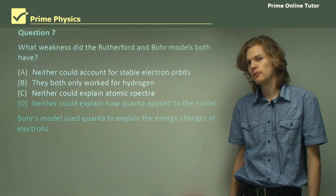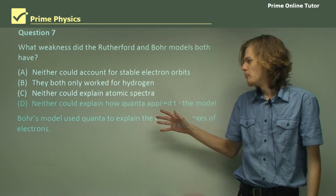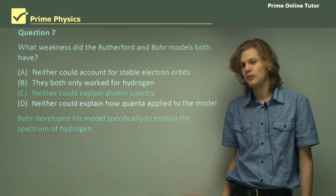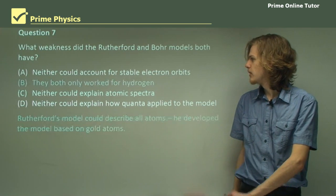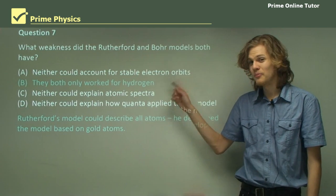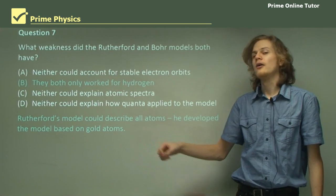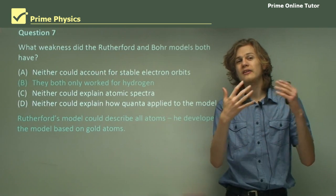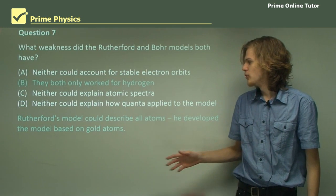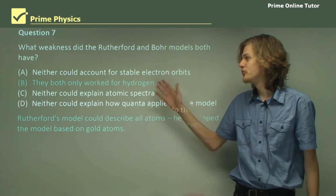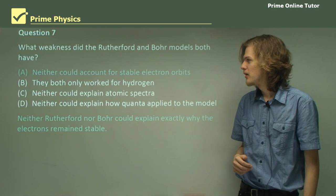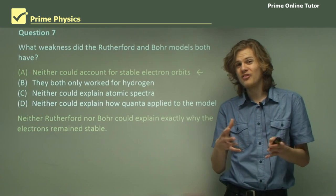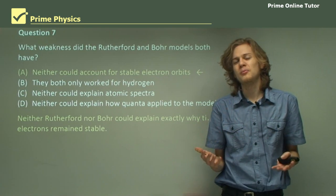D. Neither could explain how quanta applied to the model. Now it's true that Rutherford's model couldn't do this. It was completely classical. But Bohr's model did use quanta to explain the different energy levels of the electrons. So it's not D. How about C. Neither could explain atomic spectra. Well, once again, Rutherford's model couldn't do that. But Bohr's could. B. They both only worked for hydrogen. Now this is one of the big shortcomings of Bohr's model. It couldn't explain heavy atoms. But Rutherford's model could explain any sort of atom. It's just a big heavy nucleus in the middle with electrons going around the outside. And in fact, he came up with this model after he was bombarding gold atoms. And he noticed that the nucleus was doing something odd. So in fact, Rutherford's model works for all the elements. But Bohr's does not. B is not the correct answer though. Because it works for Rutherford's model. Our last option then is A. Neither could account for stable electron orbits. And in fact, this is the correct answer. Both Rutherford and Bohr knew that the electron orbits had to be stable somehow. But they couldn't explain exactly why that was.